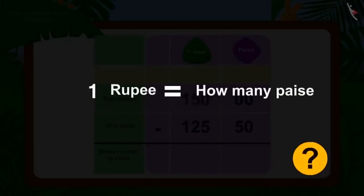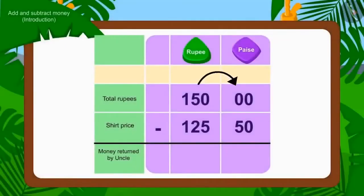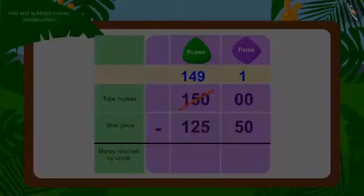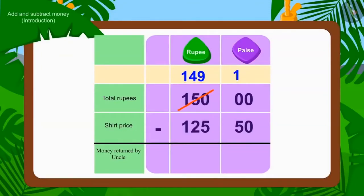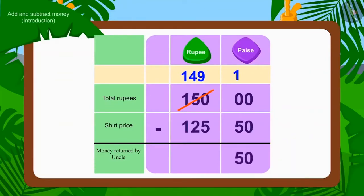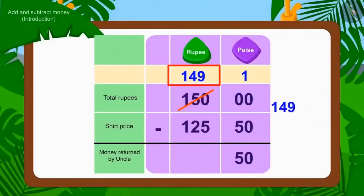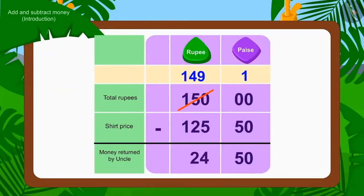How much is 1 rupee worth? 100 paise. We will borrow Rs. 1 out of Rs. 150 and show it by changing Rs. 150 to Rs. 149. Now, if we subtract 50 paise of Rs. 125.50 from the borrowed 100 paise, how many paise are left? That's right — 50 paise. Now we will subtract the rupees: 149.00 minus 125.00 equals Rs. 24.00. In this way, Uncle will have to return them Rs. 24.50.